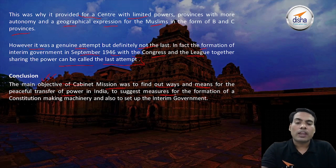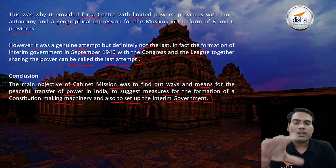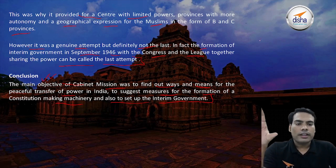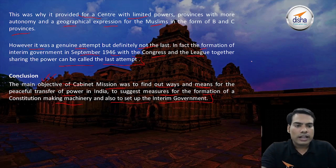The main objective of the Cabinet Mission was to find ways and means for the peaceful transfer of power in India, to suggest measures for the formation of a constitution-making machinery, and also to set up an interim government. The main purpose was to diffuse the tension between the All India Congress and the Muslim League so that bifurcation of the state did not occur.